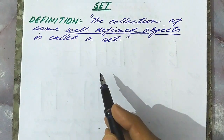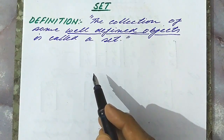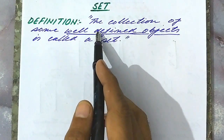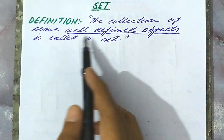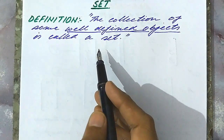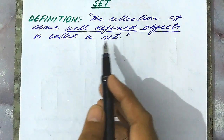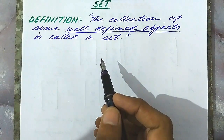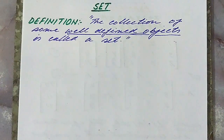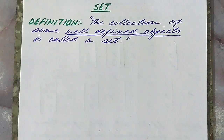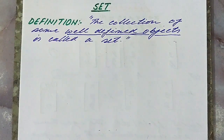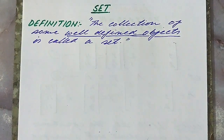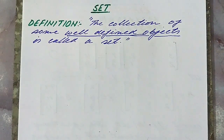Salaam everyone, today I am going to explain the basic concept of a set. The simplest definition of a set is: a collection of some well-defined objects is called a set. An object which may be tested on a definition in such a way that there is no possibility of a contradiction in selection of the object is called a well-defined object.